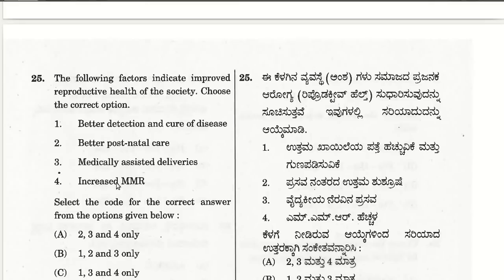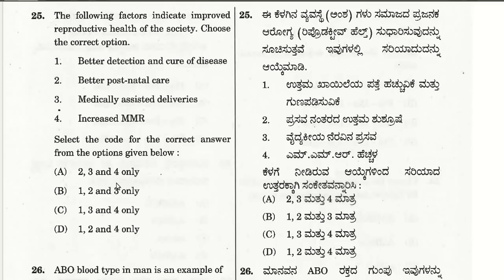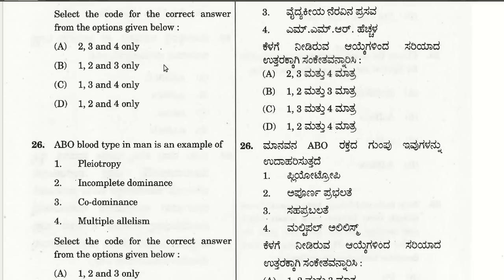The twenty-fifth question: the following factors indicate improved reproductive health of the society — better detection and cure of disease, better postnatal care, medically assisted deliveries, and increased MMR. The answer is 1, 2, and 3 only: better detection and cure of diseases, better postnatal care, and medically assisted deliveries are the three methods showing improved reproductive health of the society.